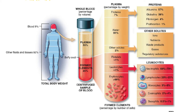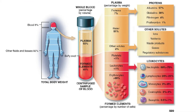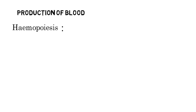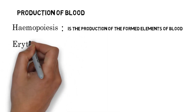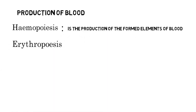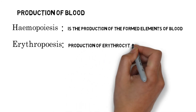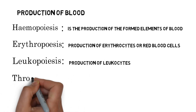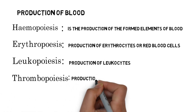Platelets make less than one percent of total blood volume, and leukocytes also make less than one percent. Erythrocytes make more than 99 percent of formed elements. Regarding production of blood: hematopoiesis is the process responsible for production of formed elements; erythropoiesis is the process by which erythrocytes are produced; leukopoiesis is the production of leukocytes; and thrombopoiesis is responsible for the production of platelets.